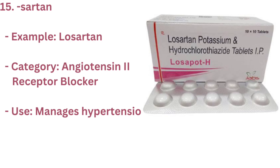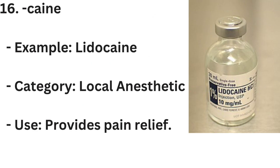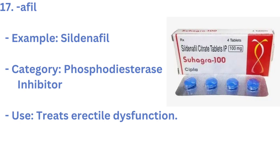15. SARTAN — Example: LOSARTAN. Category: ANGIOTENSIN II RECEPTOR BLOCKER. Use: MANAGES HYPERTENSION. 16. CAINE — Example: LIDOCAINE. Category: LOCAL ANESTHETIC. Use: PROVIDES PAIN RELIEF.